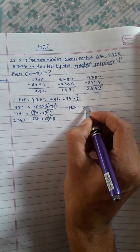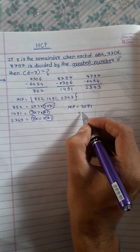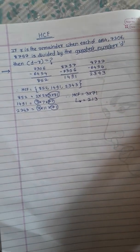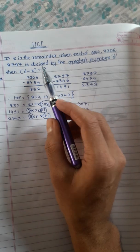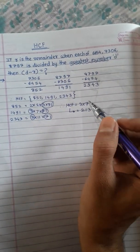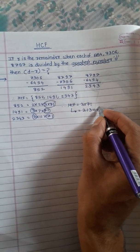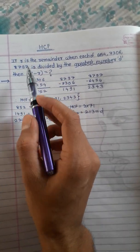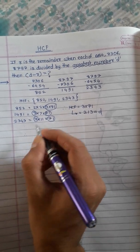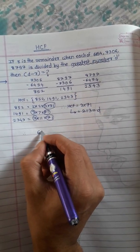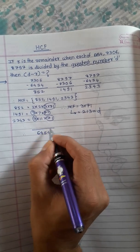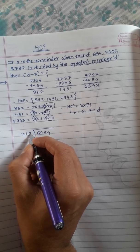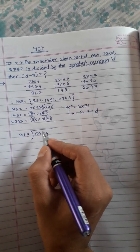Therefore the HCF will be 3 × 71 = 213. So the greatest number D equals 213. Now we want to calculate the remainder. We will take the number 6454 and divide it by 213.